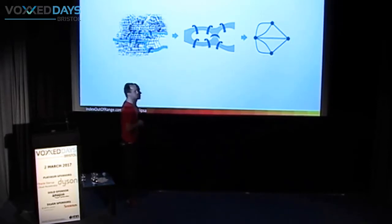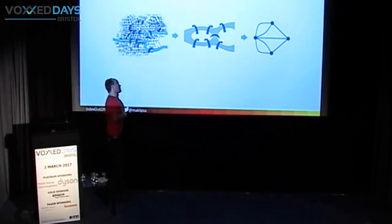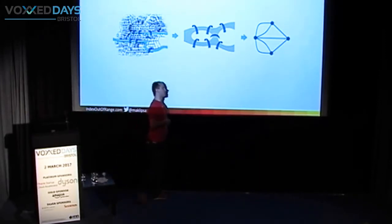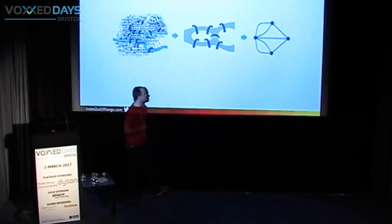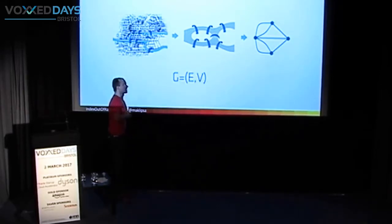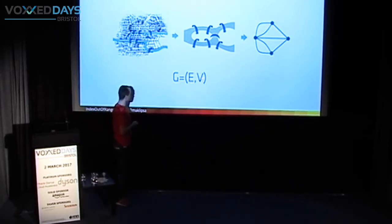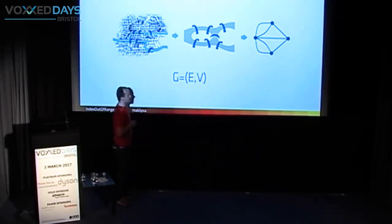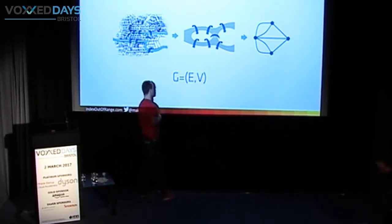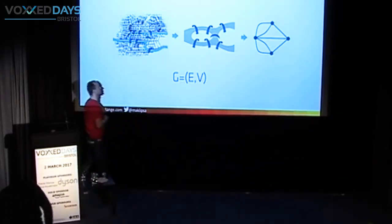Euler basically said no, you can't do it, because the number of edges going in and out from each node is not divisible by two. Long, long time after that, we had the definition of a graph: a graph is a pair of all nodes and edges connecting those nodes. So basically, this is the math definition and the legend definition.